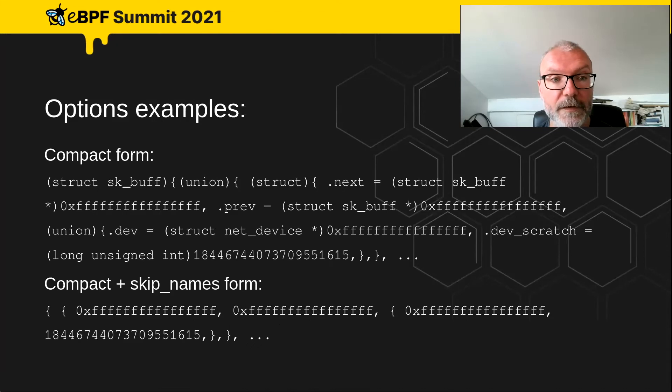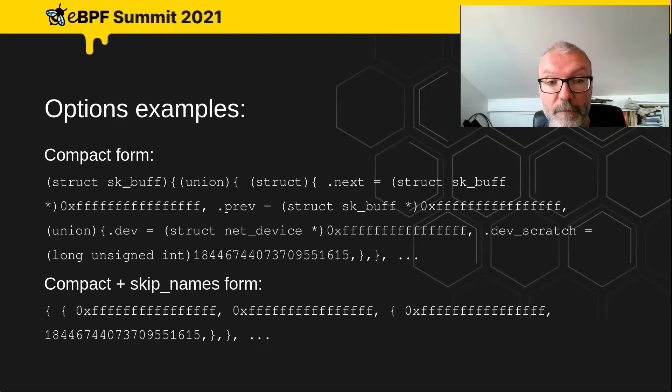Here's an example: in the compact form you can see we've stripped away most of the whitespace, and in the skip-names form the member names are not shown — we just get the type data.